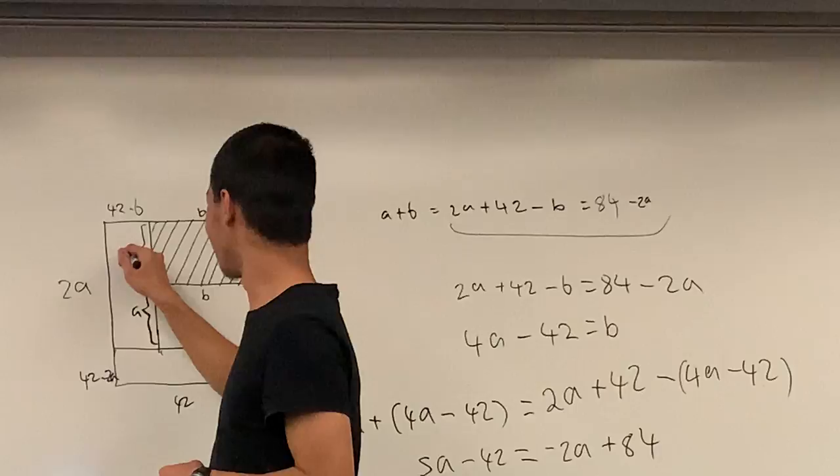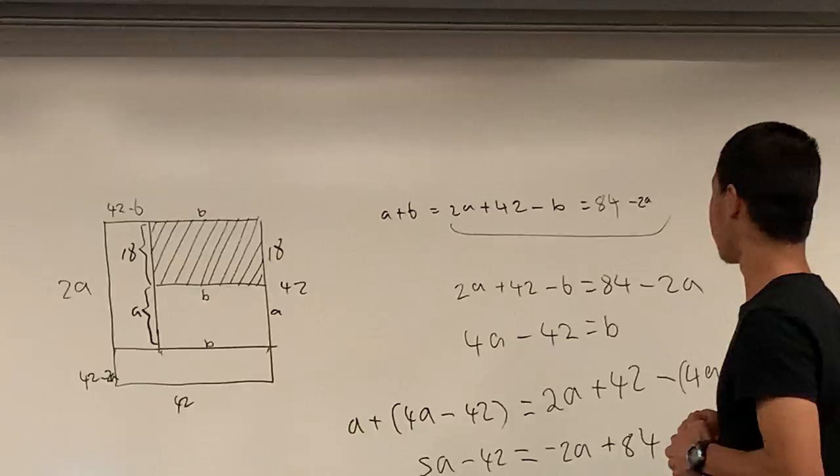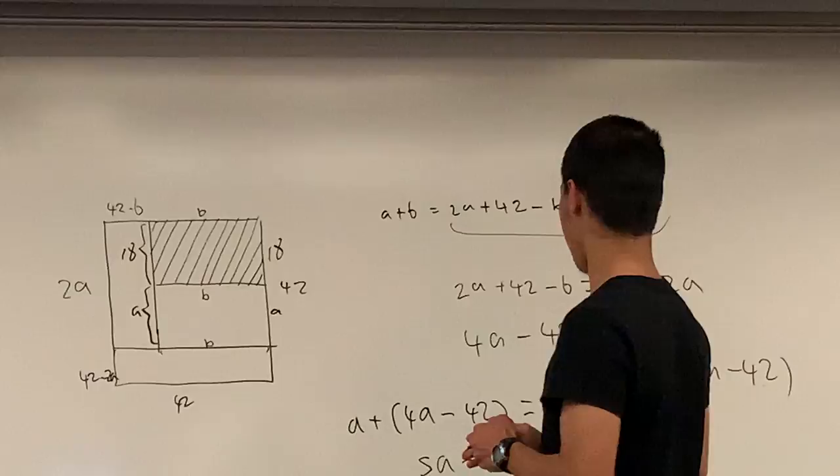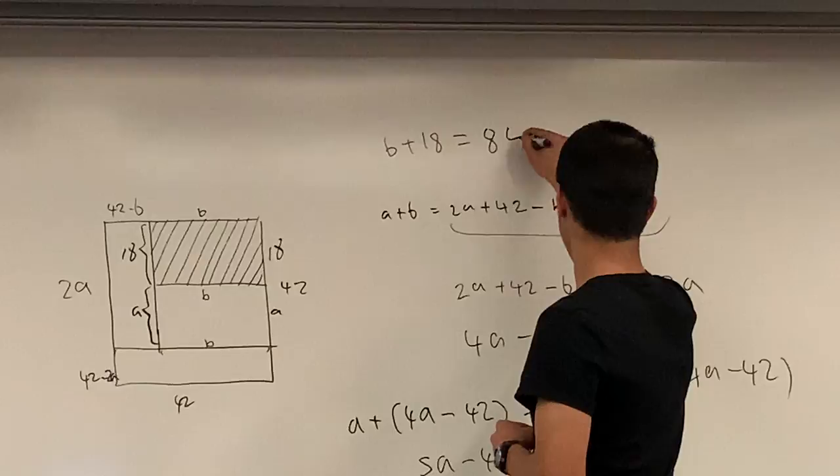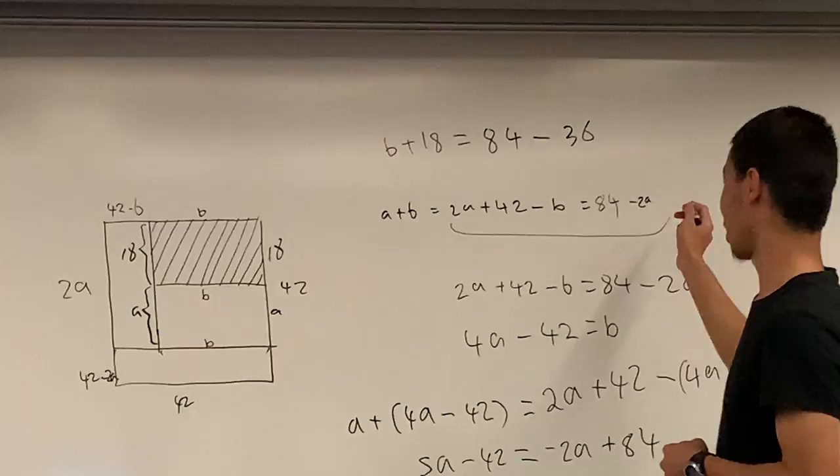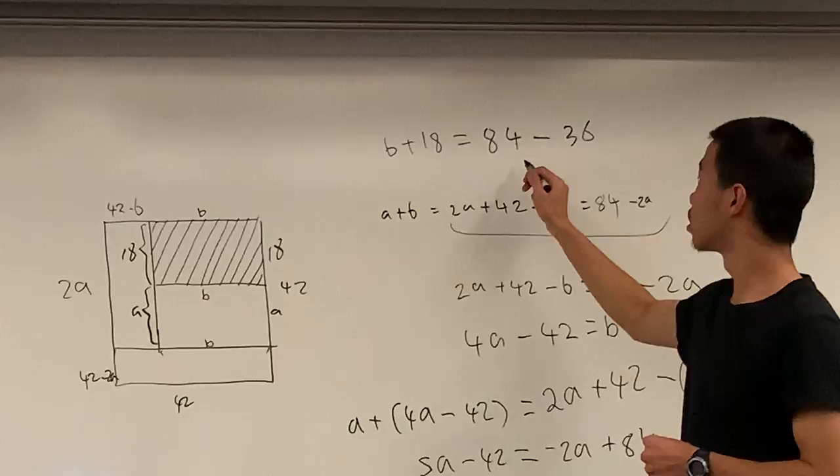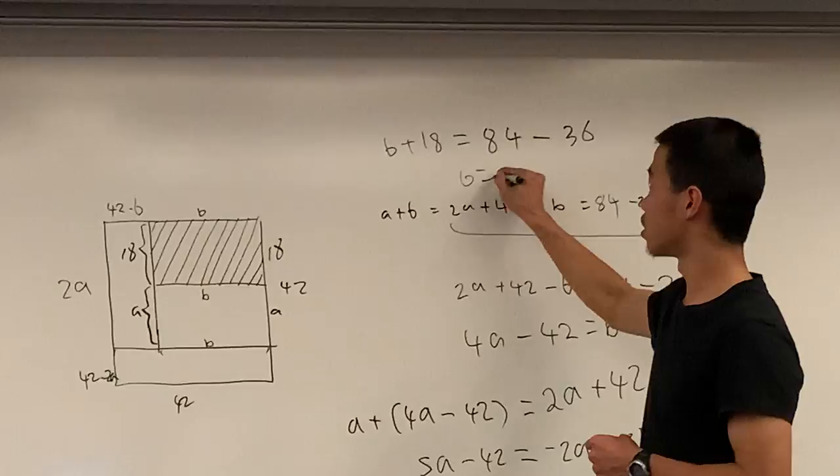And then you just plug 18 into one of these ones. So B plus 18 is equal to 2A times, 2A minus B. I need to plug 2B, is it equal to 84 minus 36, because we're plugging into the second one, these two. So 84 minus 36. Yeah. B equals 30. Yeah. After moving all of these numbers from one side, B equals 30.